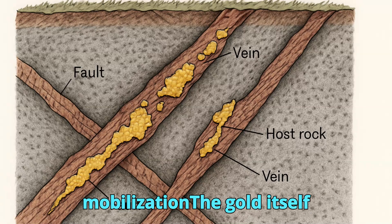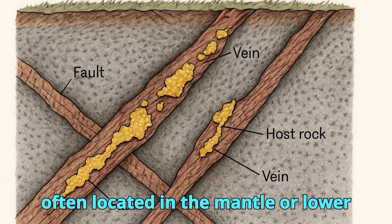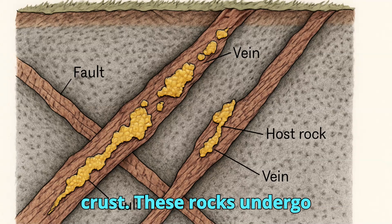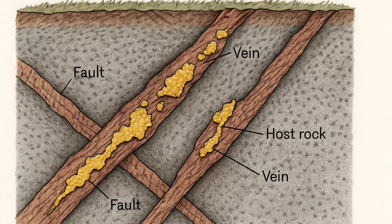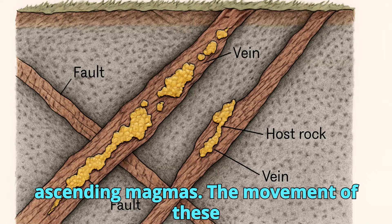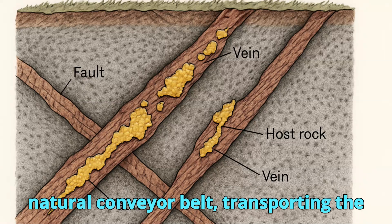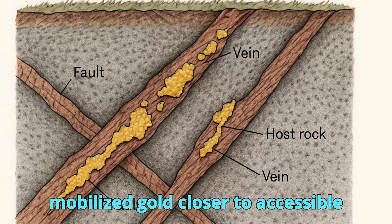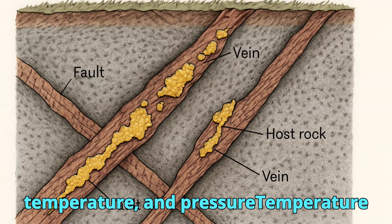Source rocks and gold mobilization. The gold itself originates from deep-seated source rocks, often located in the mantle or lower crust. These rocks undergo partial melting due to tectonic forces, releasing gold and other metals into ascending magmas. The movement of these magmas toward the surface acts as a natural conveyor belt, transporting the mobilized gold closer to accessible crustal levels.